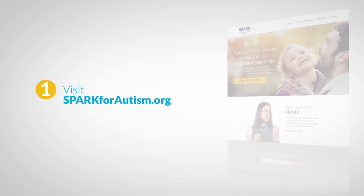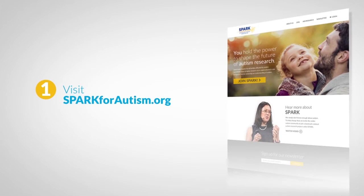There are four simple steps to complete your enrollment. First, visit SPARC online at sparkforautism.org to register. You'll be asked to provide your contact information, identify the individual with autism to be enrolled, and create a username and password.